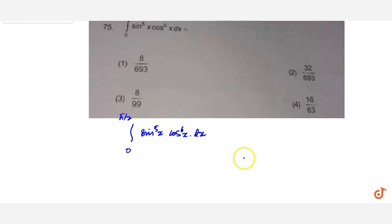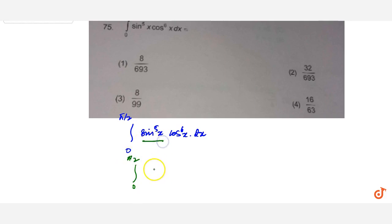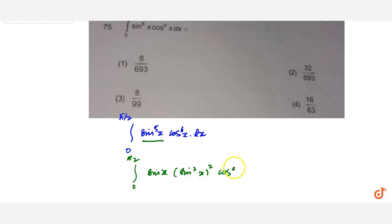First we will separate it. We can write the integral from 0 to π/2 as sinx into sin squared x into cos raised to power 6x dx.